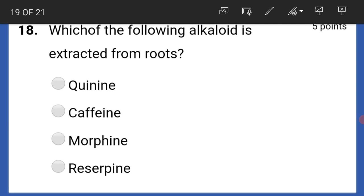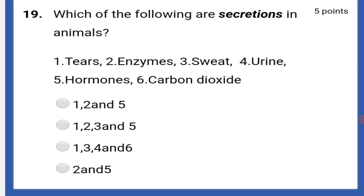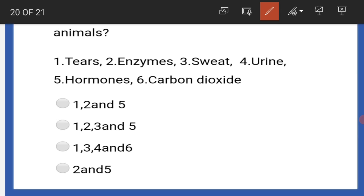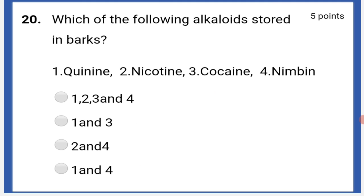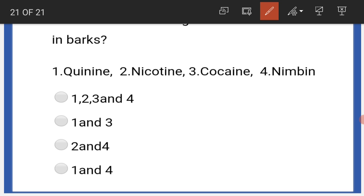Which of the following alkaloids are extracted from roots? That is reserpine. Which of the following are secretions in animals? That is two and five — that is enzymes and hormones. Which of the following alkaloids are stored in barks? That is quinine and nimbine — one and four.